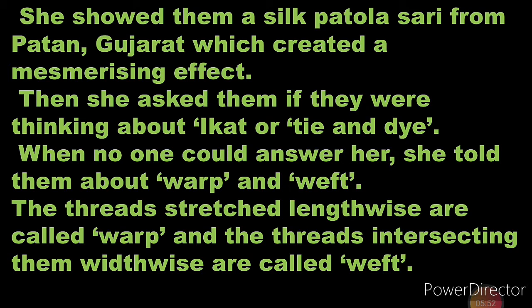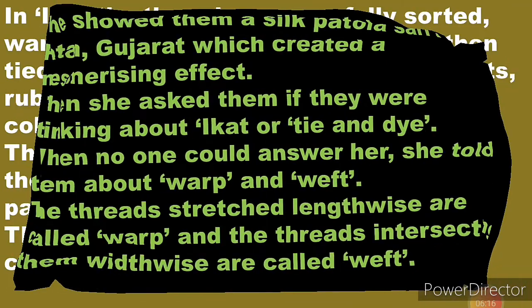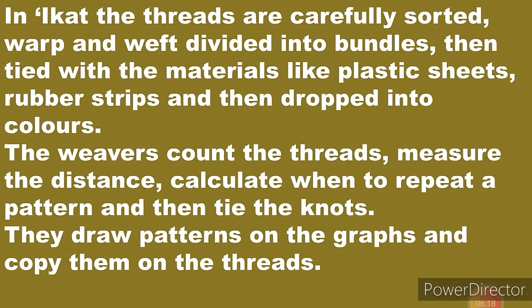Janaki revealed two key definitions: the threads stretched lengthwise are called warp, and the threads intersecting them widthwise are called weft. In Ikat, the threads are carefully sorted — warp and weft divided into bundles — then tied with materials like plastic sheets and rubber strips, and then dipped into colors.